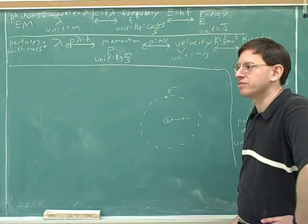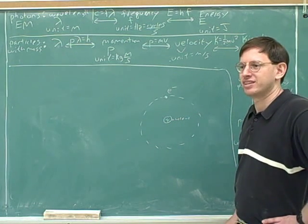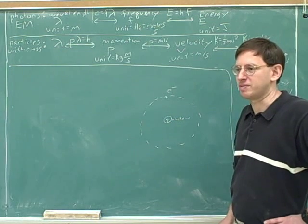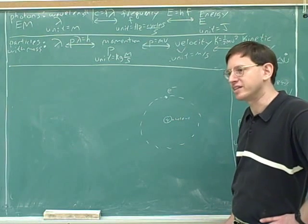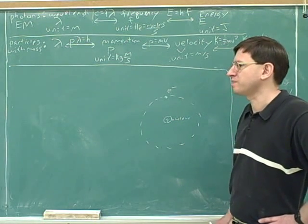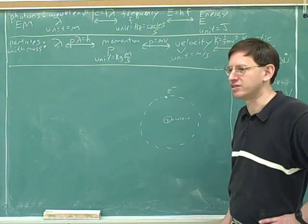All right, now in the solar system, theoretically, a planet can be at any distance from the sun. As long as it's going at the right speed, a planet can be at any distance from the sun. There's no distance that's forbidden to a planet. As long as it's going at the right speed, it can be at any distance from the sun, which means that basically planets can have any energy of motion. They can be at any distance from the sun in any energy.